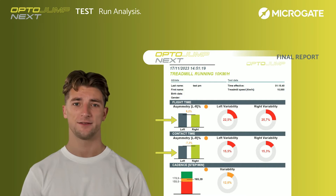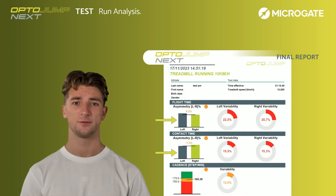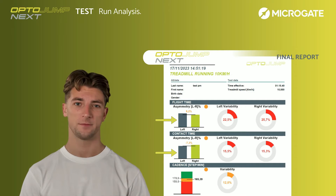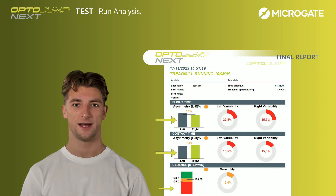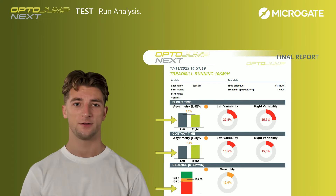Moving on to the 7.3% asymmetry in contact time, where the right leg spends more time on the ground, together with the overall variability — this suggests a possible imbalance in weight distribution or a difference in how the legs handle the support phase. While the cadence of 165.39 isn't exceptionally high, the 12% variability suggests a flexible adaptation in walking or running. This adaptability might be the athlete's way of adjusting to different surfaces or environmental changes.